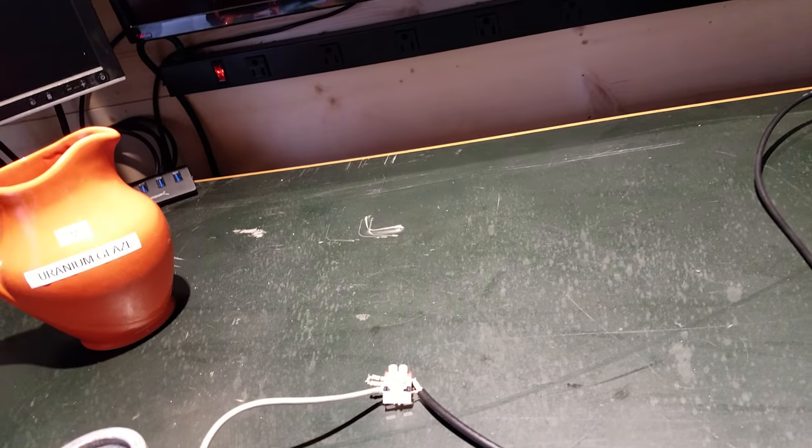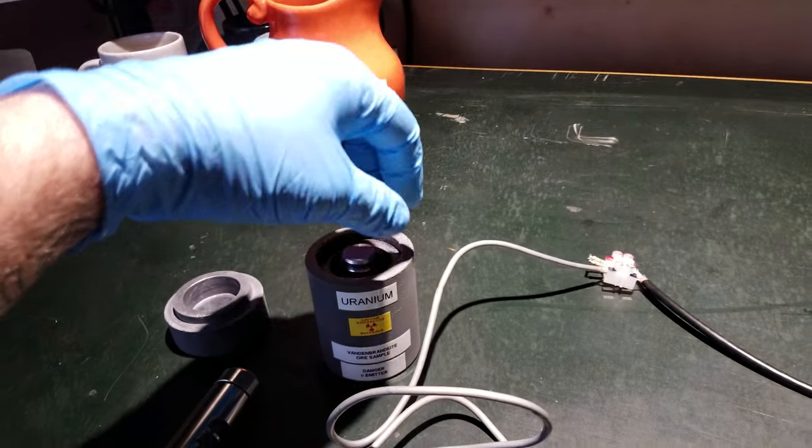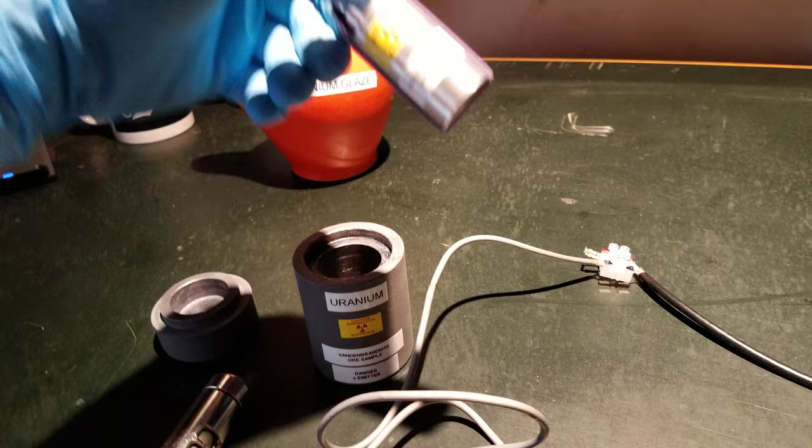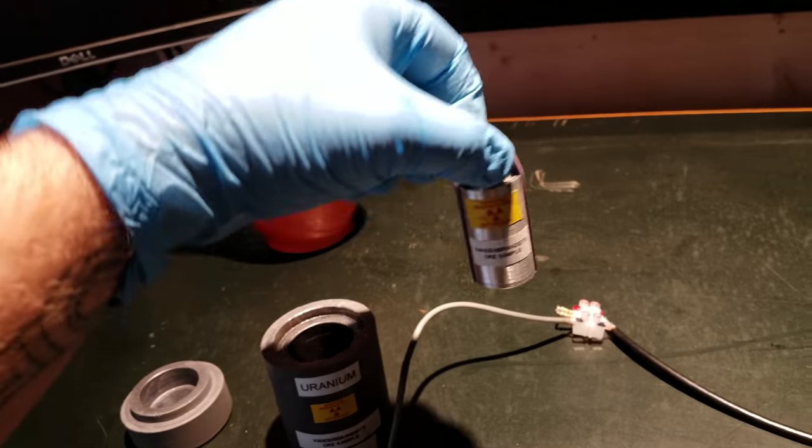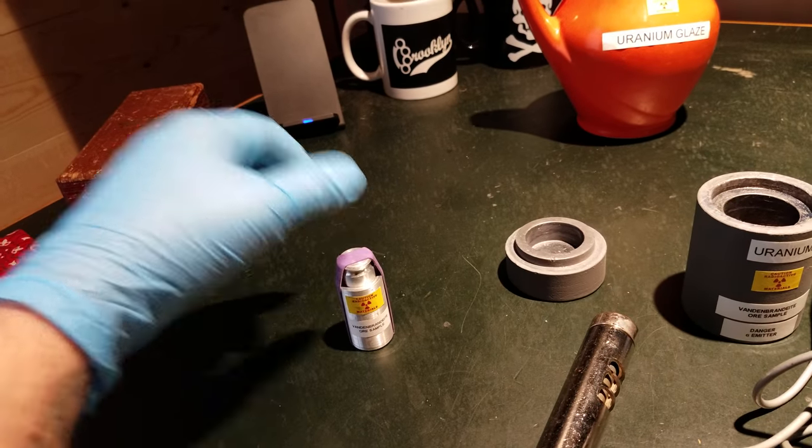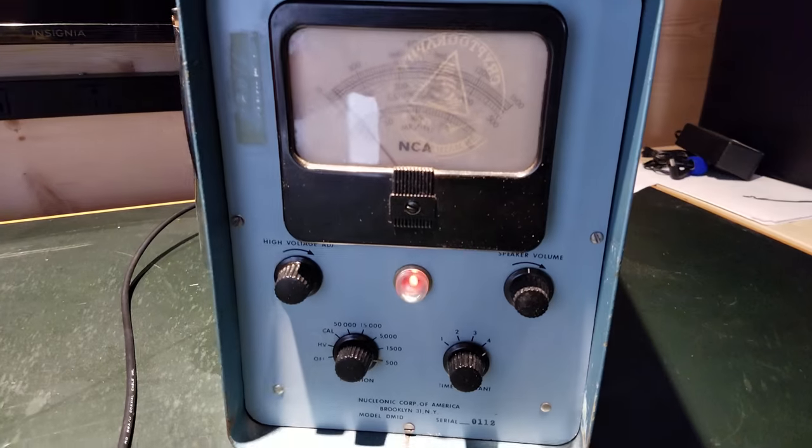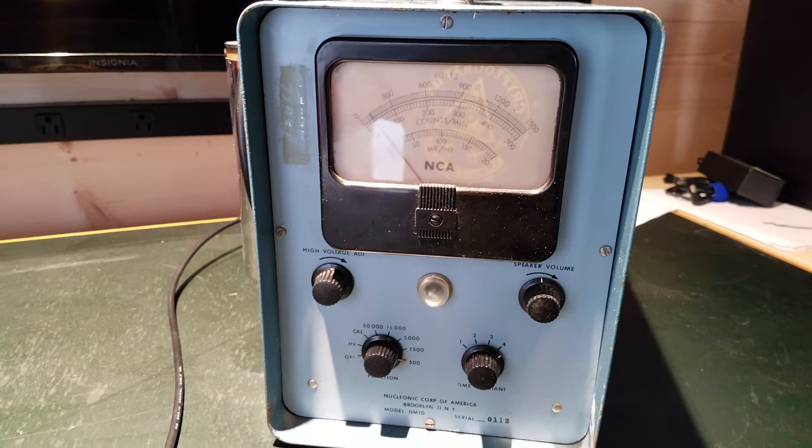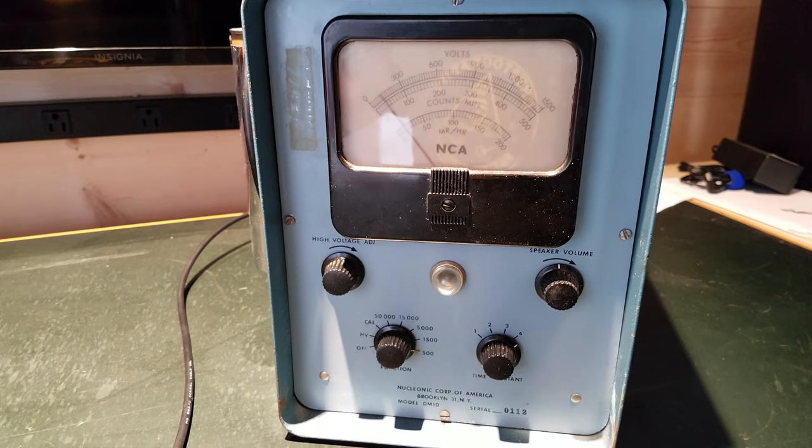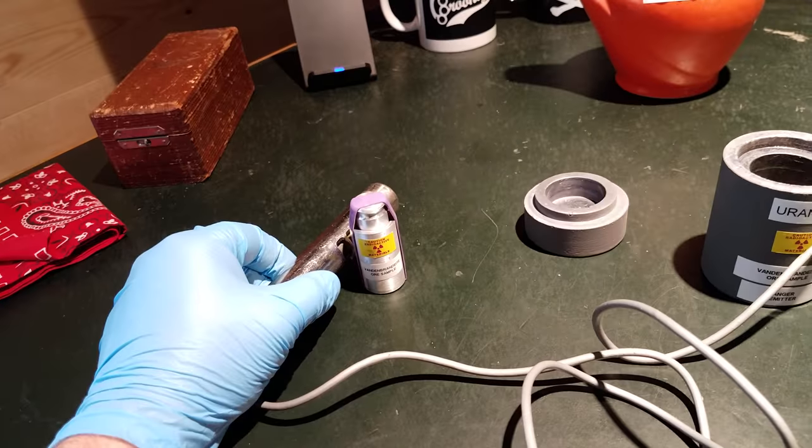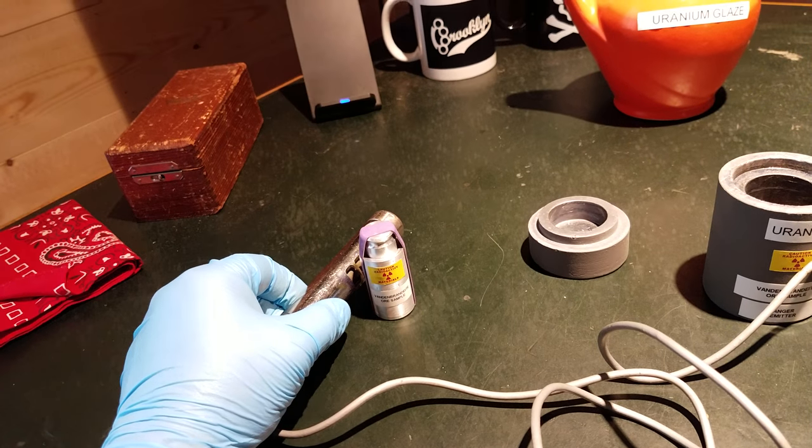Then I'll go ahead and pull the beta shield out, the beta jar out. This is quarter inch 99.9% pure aluminum. So we're getting a lot more gamma beta there. Some of the betas that are emitted by the U238 decay chain aren't entirely blocked by this container.